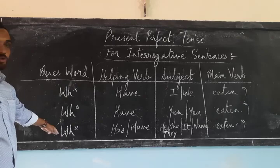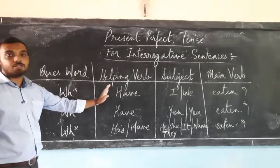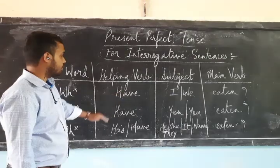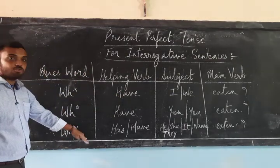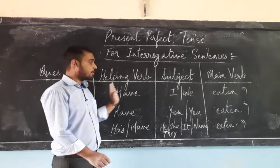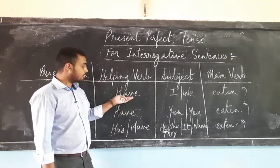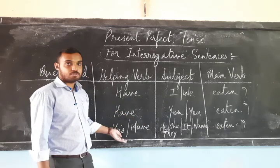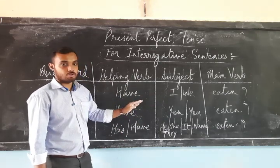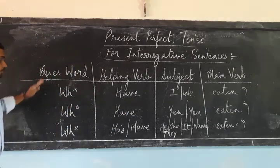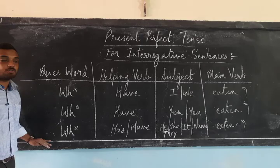Only the question word has to be added at the beginning of the sentence; the rest of the structure remains the same. If you leave out the question word, you have only yes-no questions. All three persons — first, second, and third — form yes-no questions in the same way. But the moment you add a question word at the beginning, it becomes an information question.